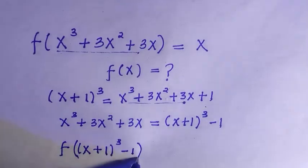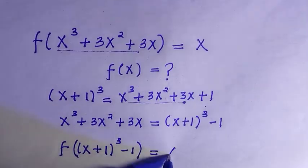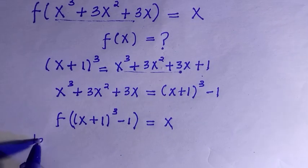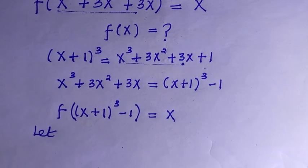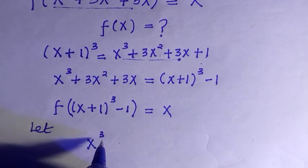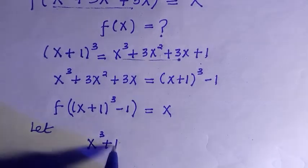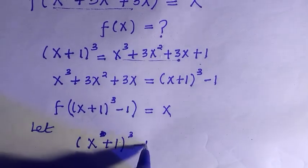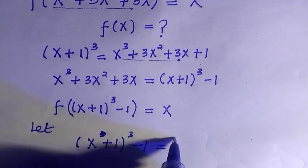At this stage, this is not looking quite right yet. What I'll do is let (x+1)³ - 1 equal to another variable. I'm choosing t, and I'll make x the subject of the formula.